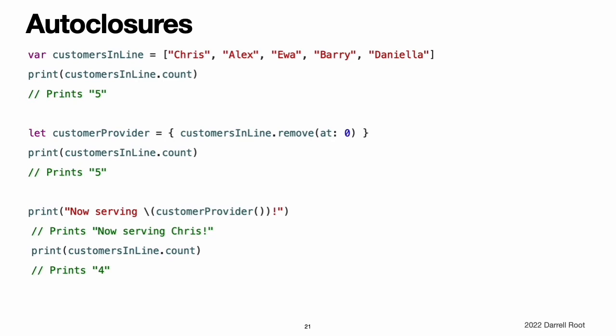Auto closures. An auto closure is a closure that is automatically created to wrap an expression that is being passed as an argument to a function. It does not take any arguments, and when it is called it returns the value of the expression that is wrapped inside of it. This syntactic convenience lets you omit braces around a function's parameter by writing a normal expression instead of an explicit closure. It is common to call functions that take auto closures, but it is not common to implement that kind of function. For example, the assert function takes an auto closure for its condition and message parameters. Its condition parameter is evaluated only in debug builds, and its message parameter is evaluated only if condition is false. An auto closure lets you delay evaluation because the code inside is not run until you call the closure. Delaying evaluation is useful for code that has side effects or is computationally expensive because it lets you control when the code is evaluated.